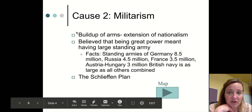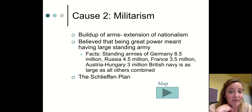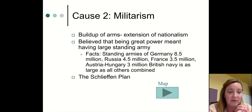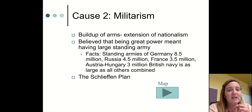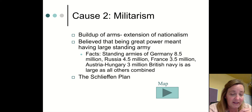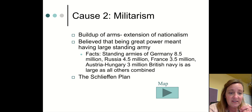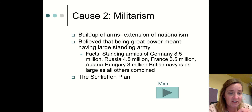The next major cause is militarism — the buildup of armaments and weapons. It's an extension of nationalism because you're showing the strength of your country based on the size of your military. They believed that being a great power meant having a large standing army. Germany had 8.5 million soldiers, Russia had 4.5 million, France 3.5 million, Austria-Hungary 3 million, and the British Navy was as large as all the others combined. A lot of these European countries already had plans for how they would attack other countries — they were just waiting for an opportunity.